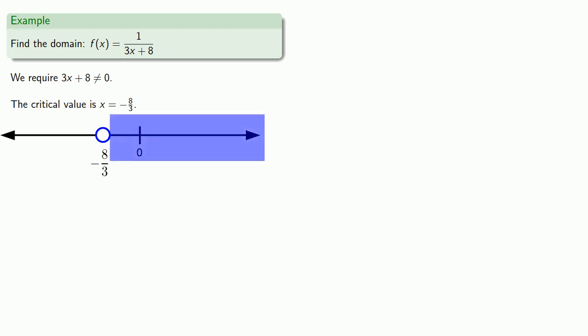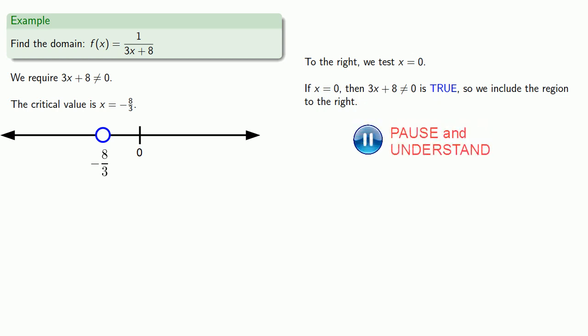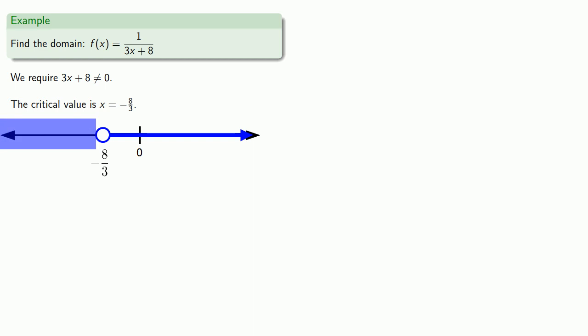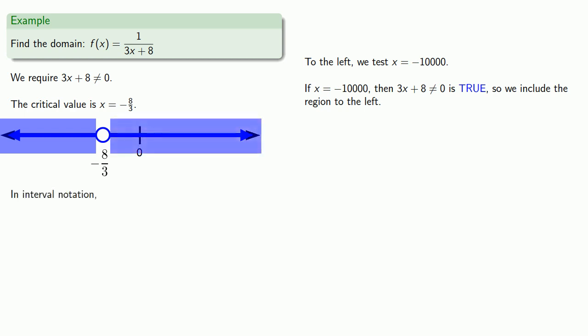To the right, x = 0 is included in the right interval, so let's test that point. If x = 0, then our inequality 3x + 8 ≠ 0 is true, so we include the region to the right. And so our domain is all the values to the left together with all the values to the right of the critical value. In interval notation, we can write this as...